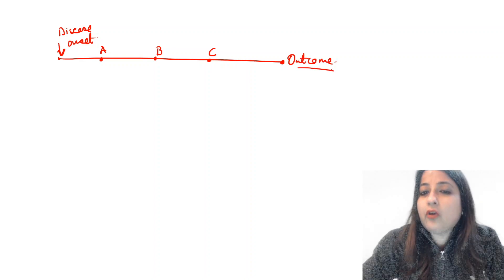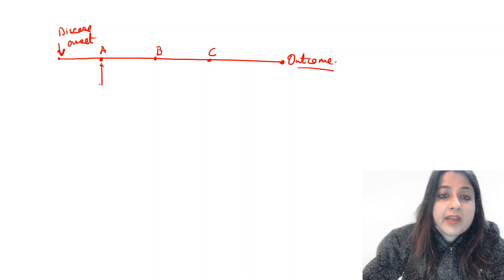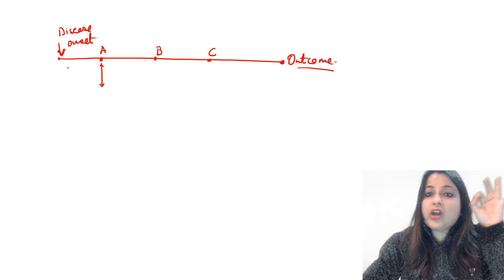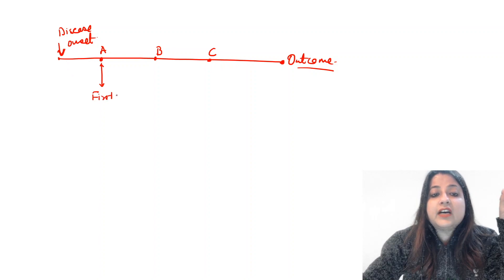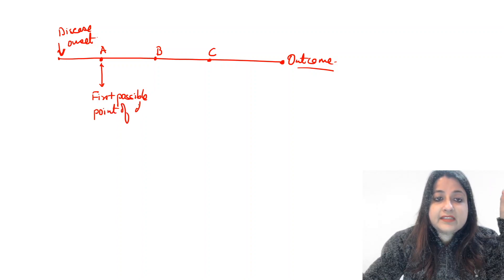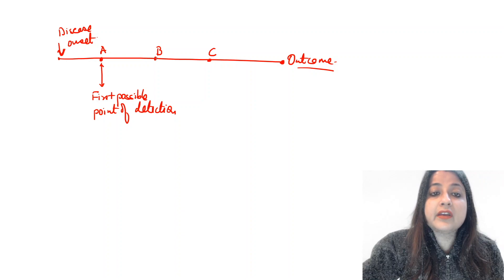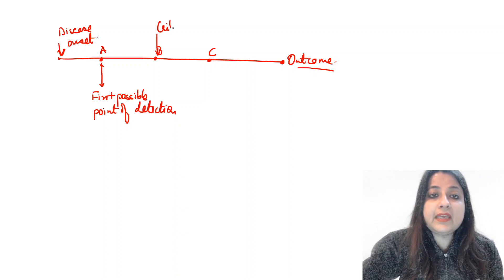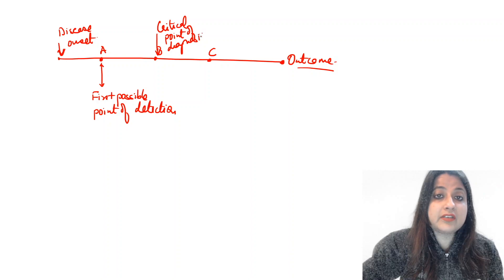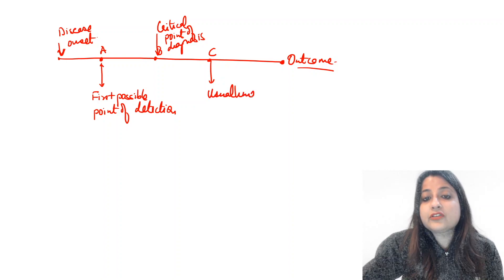The outcome of any disease could be recovery, death, or prolonged survival. Point A is when the disease has started but we do not have any signs and symptoms yet — so point A is the first possible point of detection. Point B is the critical point of diagnosis.